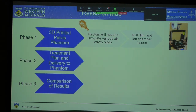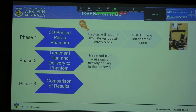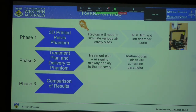Both radiochromic film and ion chamber inserts will need to be in the phantom, as the dose distribution will be measured by the film and the absolute dose by an ion chamber. The second phase is the treatment plan and delivery to the phantom. Treatment plans will be created by assigning a density midway between air and tissue to the cavity, and another using the air cavity correction parameter. Both will be delivered by a Varian Linac for various air cavity sizes.